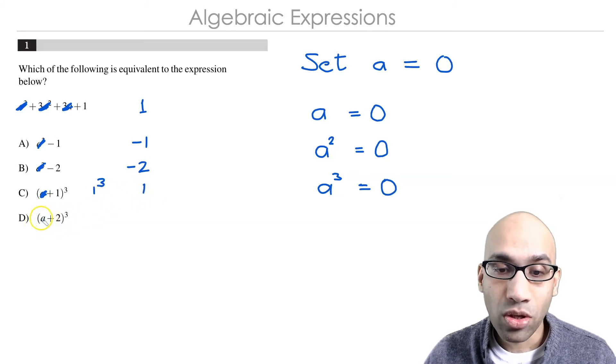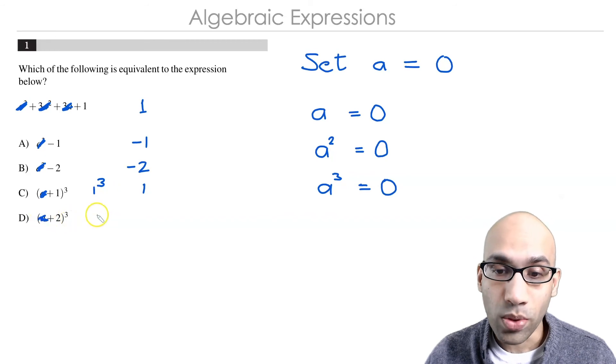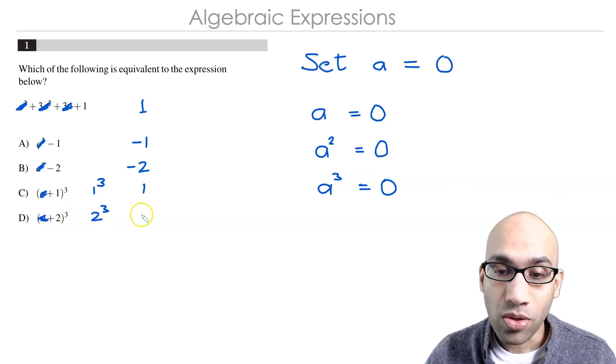And then the last term here, you cancel out the a, you've got 2³, which is equal to 8.